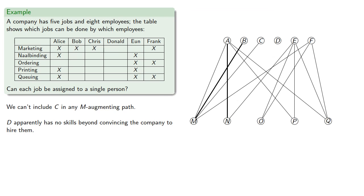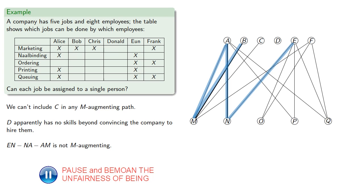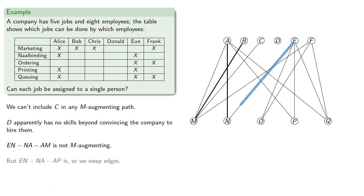But if we start at E, we find that EN-NA-AM is not M-augmenting. But EN-NA-AP is, so we switch edges.